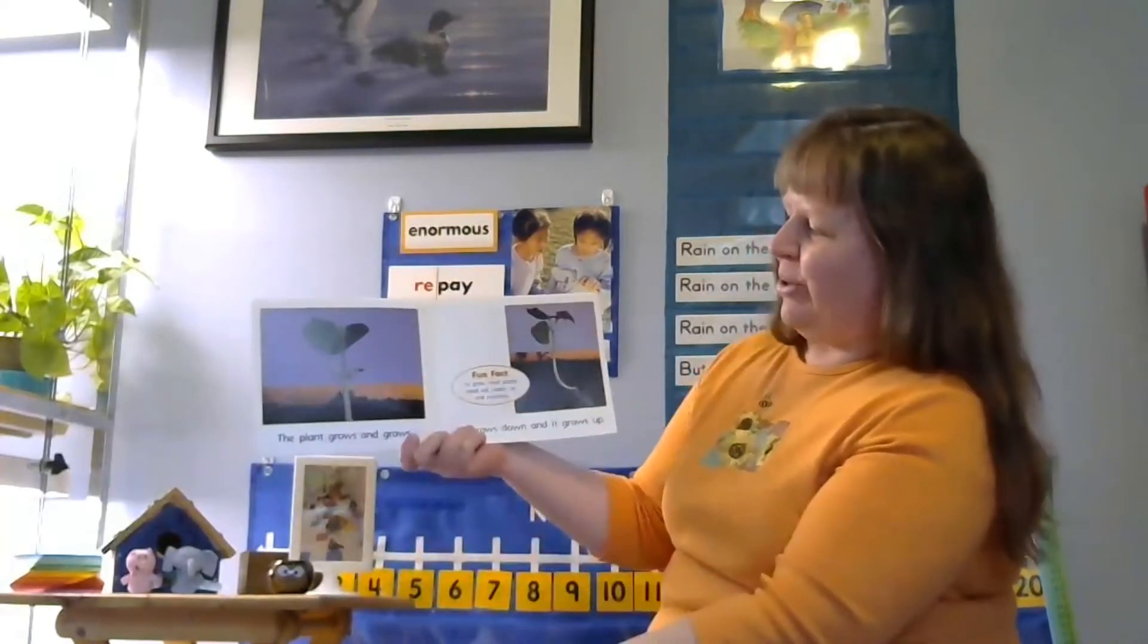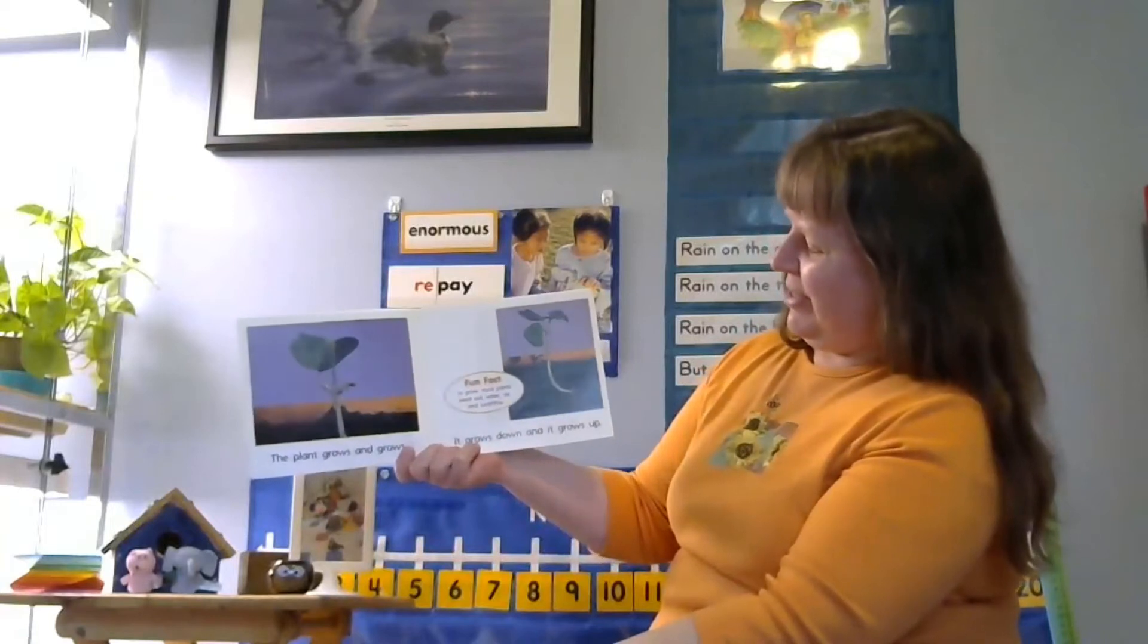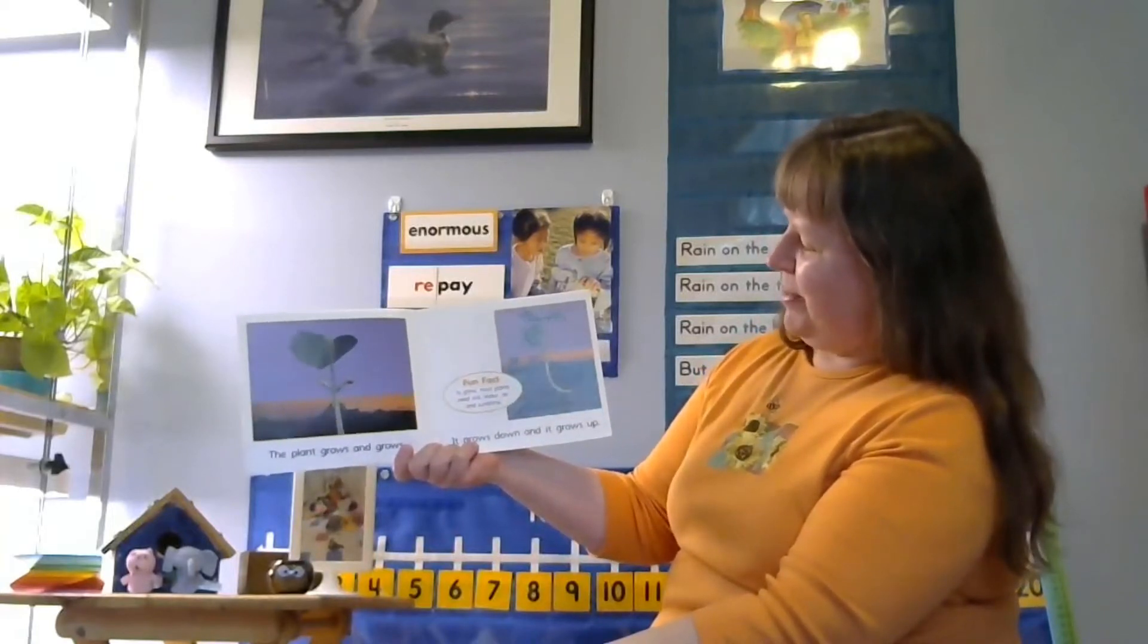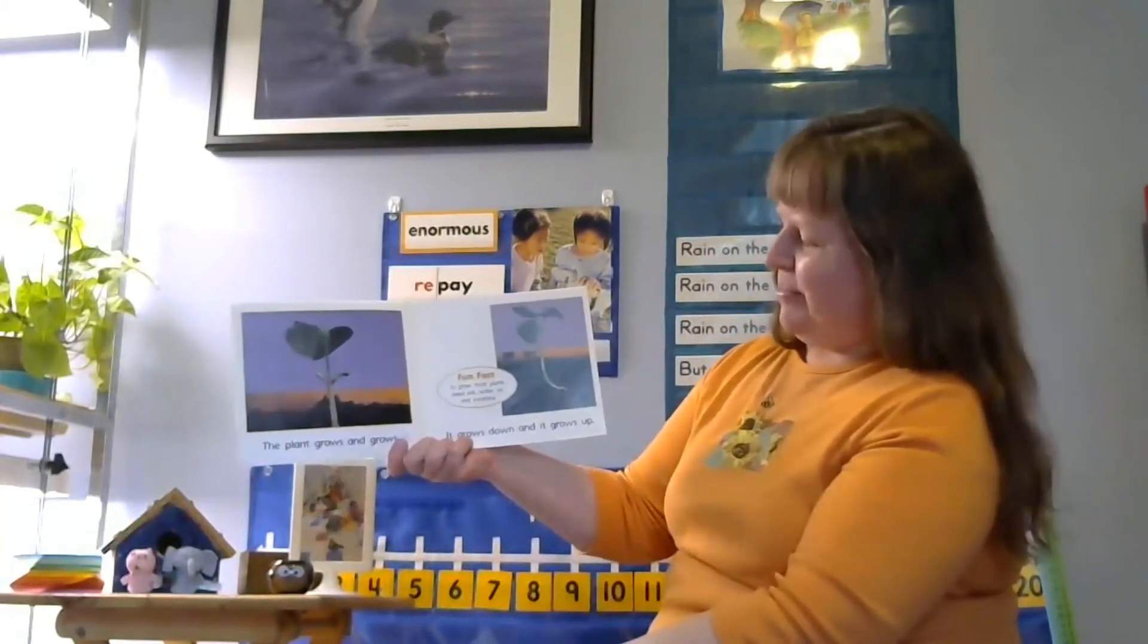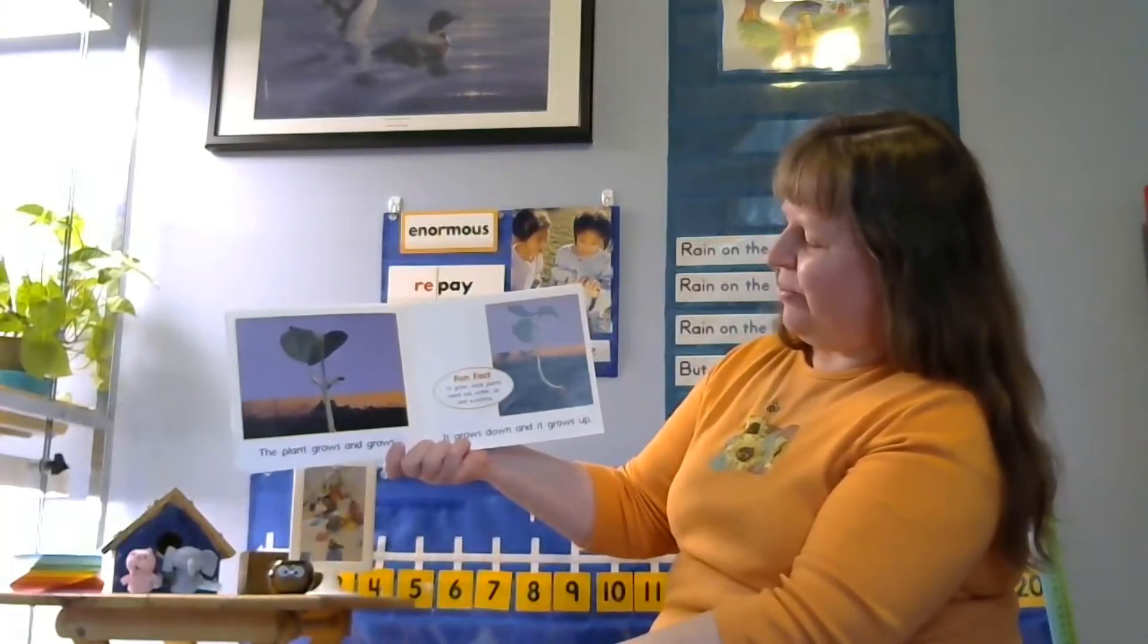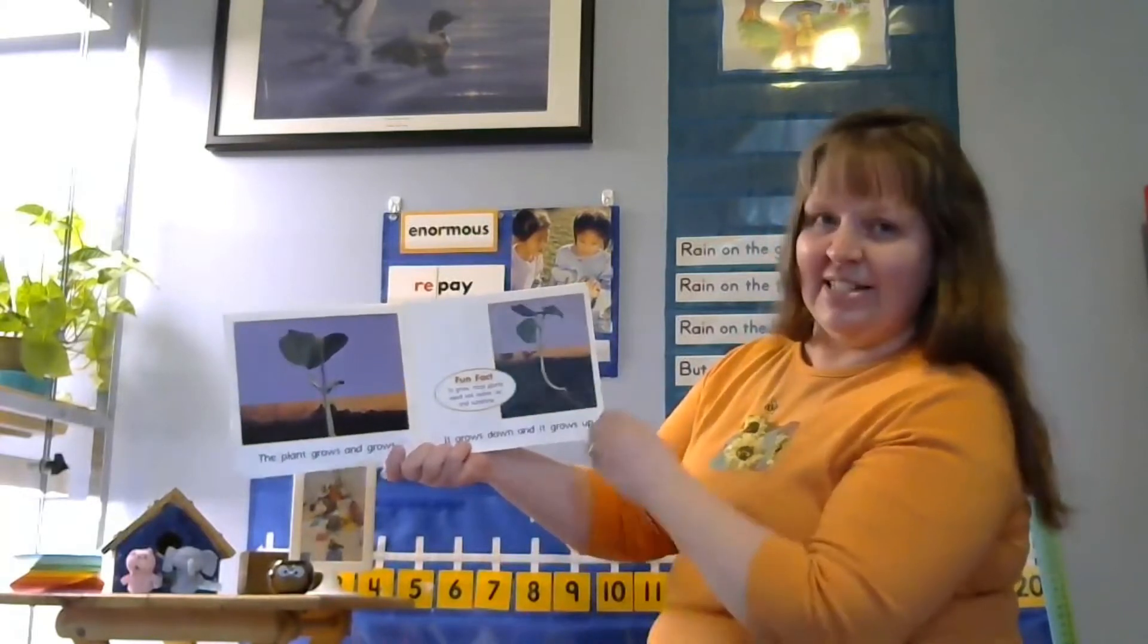The plant grows and grows. It grows down and it grows up. So it's sending more roots down into the ground and it's sending more leaves up. To grow most plants need soil, water, air, and sunshine.